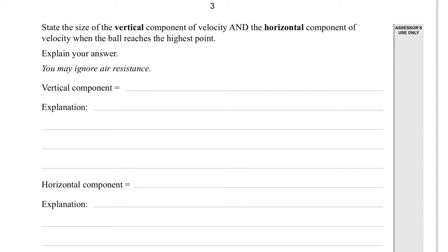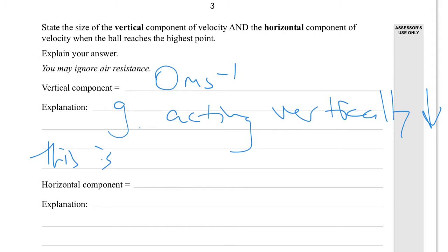The vertical component of the velocity must be 0 meters per second. The explanation is gravity is acting vertically, vertically down. And this is the only force because we're ignoring air resistance. The only force.